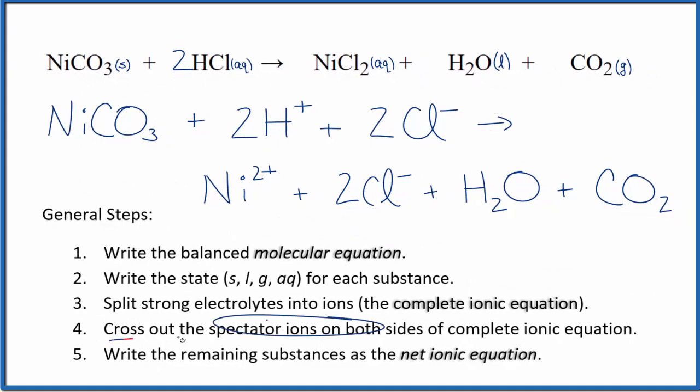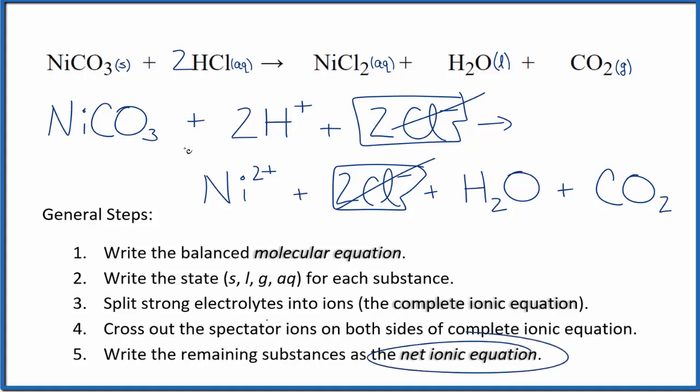Now we can cross out spectator ions. They're on both sides of this complete ionic equation. So in the reactants, all I see is that I have 2 chloride ions here and in the product. So that's the only thing that's the same spectator ions. We're going to cross those out. What's left, that's our net ionic equation for NiCO3 plus HCl.